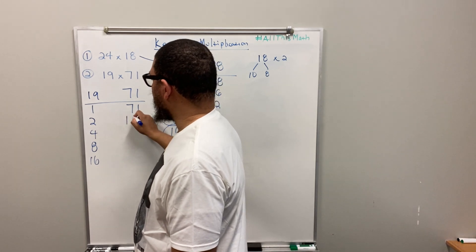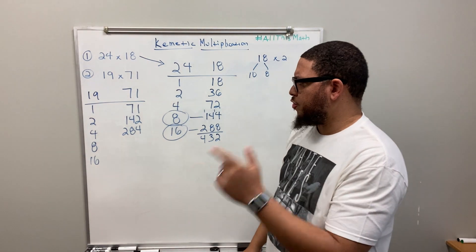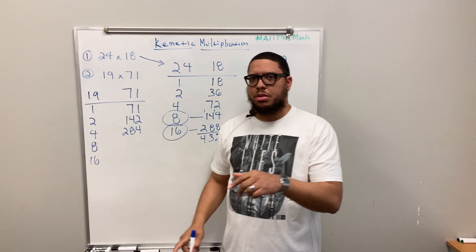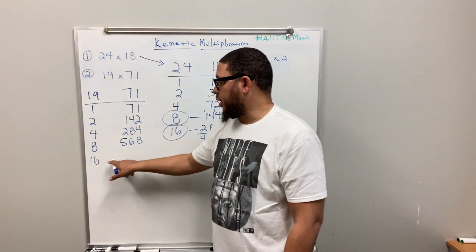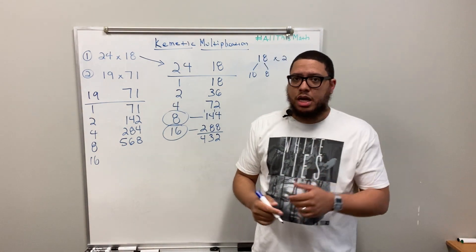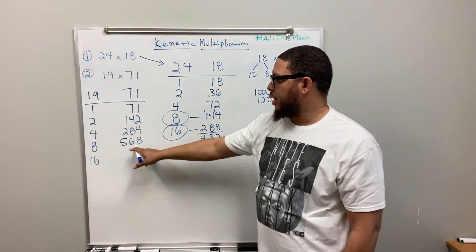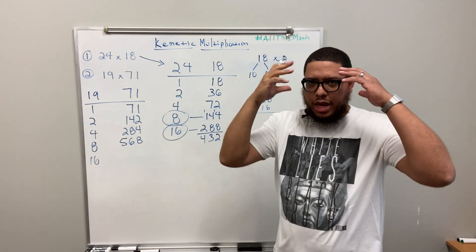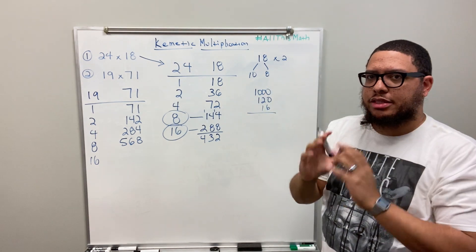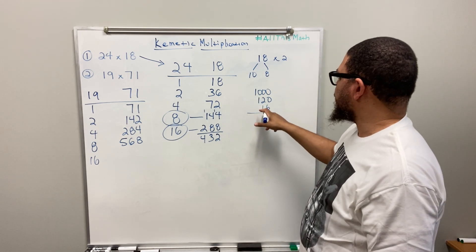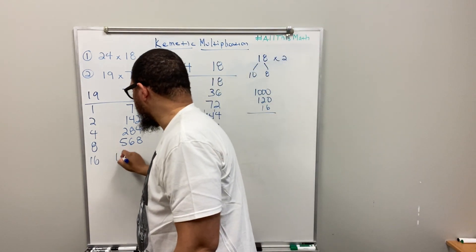In the second column, start with 71 and double: 71 gives 142, double 142 gives 284, double 284: 200×2=400, 80×2=160, that's 560, and 4×2=8, so 568. One more: double 568 — 500×2=1000, 60×2=120, 8×2=16. You want to get into the habit of manipulating this in your head; it takes practice. That gives us 1000+120+16=1136.